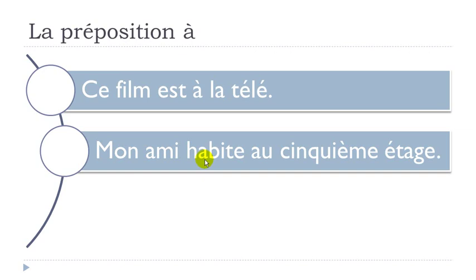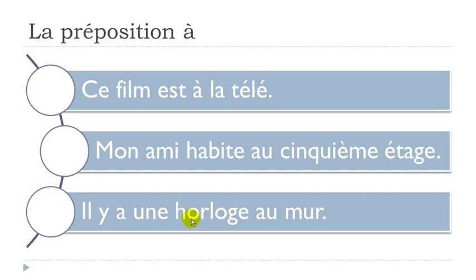Second example: 'Mon ami habite au cinquième étage' — 'au' is À combined with 'le', 'cinquième' is fifth, 'étage' is floor, so your friend is living on the fifth floor. Third example: 'Il y a une horloge au mur' — there is a clock on the wall; 'au mur' again combines À and 'le'. So: 'Ce film est à la télé', 'Mon ami habite au cinquième étage', 'Il y a une horloge au mur'.